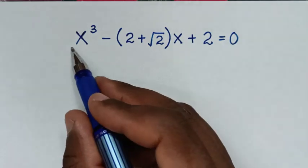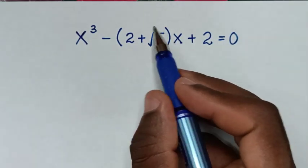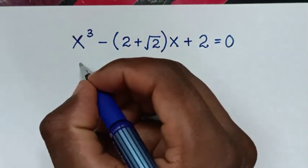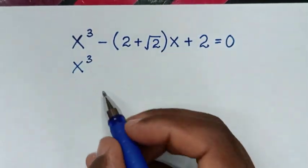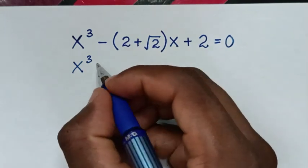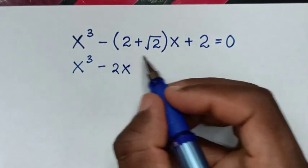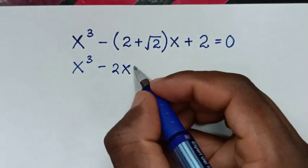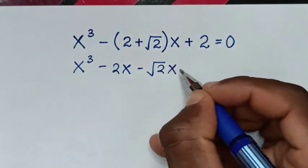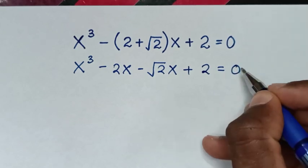In the first step, we take the negative x inside the bracket on the left side, giving us: x³, then negative x times 2 is negative 2x, negative x times square root of 2 is negative square root of 2 times x, then plus 2 equals 0.